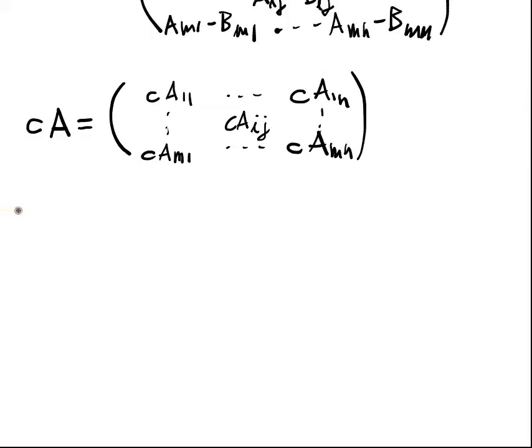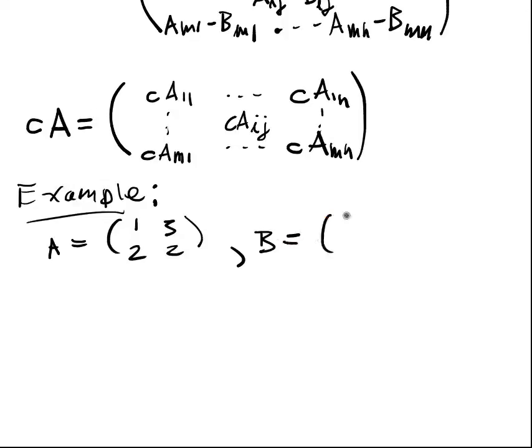So just a quick example to make things concrete. Suppose A is equal to 1, 3, 2, 2. B is equal to 4, 4, 2, 3.